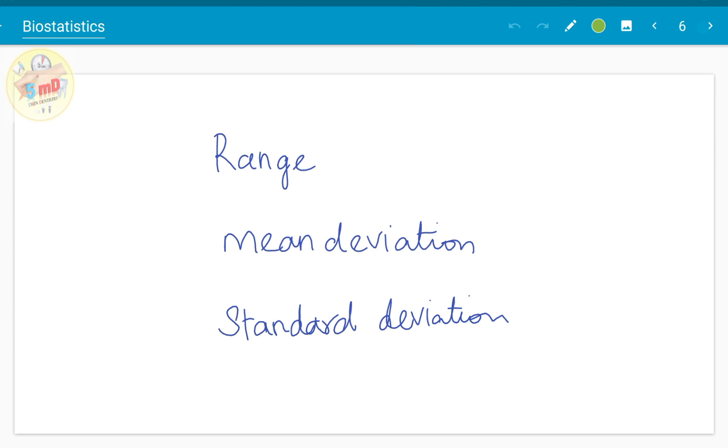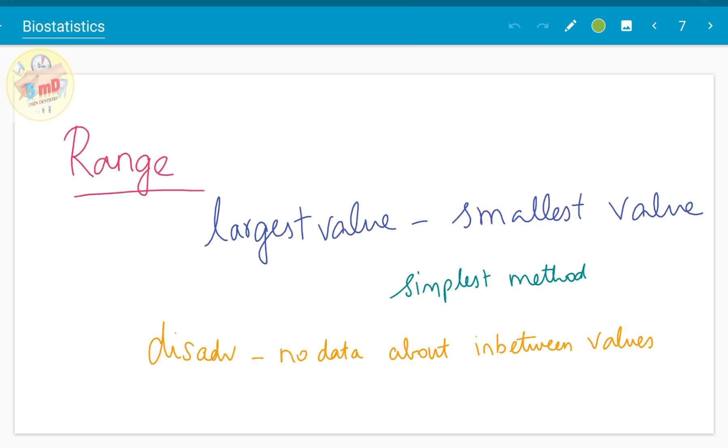There are three commonly used measures of dispersion: range, mean deviation, and standard deviation. Range is the difference between the value of the largest observation and the value of the smallest observation. After subtracting these two values, we get the range. It is the simplest method, and the disadvantage is that no data about the in-between values—we only have an idea about the largest value and the smallest value.